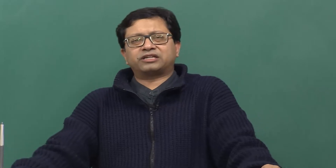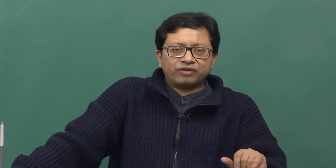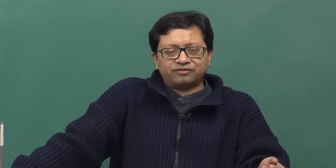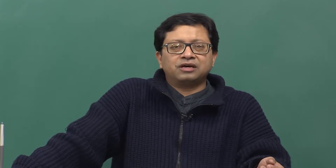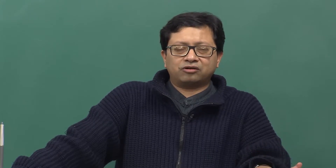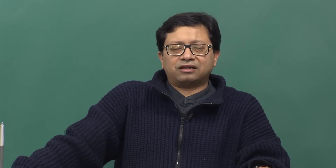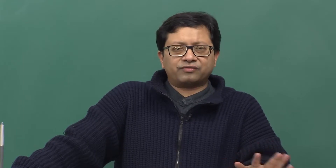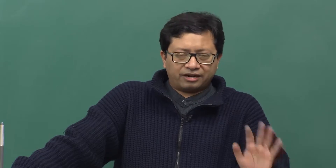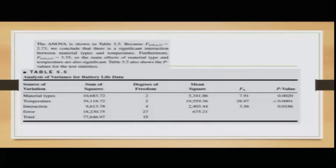An important concept mentioned repeatedly is that errors from factor A and errors from factor B are additional components over sigma-squared, which represents the error variance. Given the errors from A, B, their combination, and the total error, we can use simple calculations to find each component. We then construct the ANOVA table (Table 5.5) and use the F distribution to make comparisons.